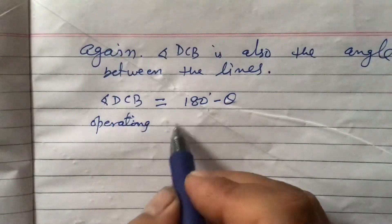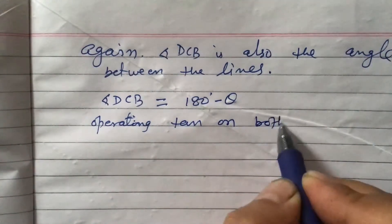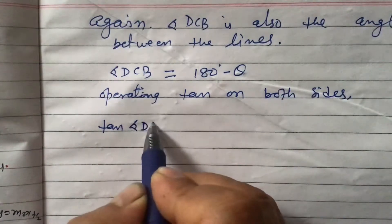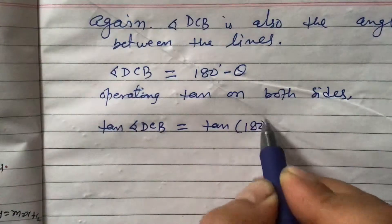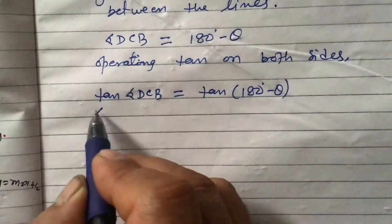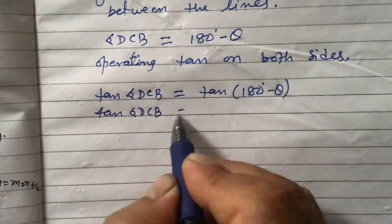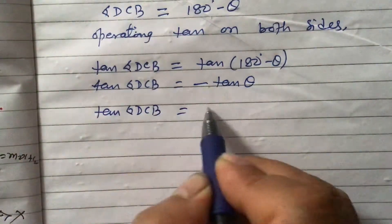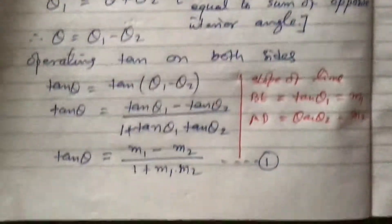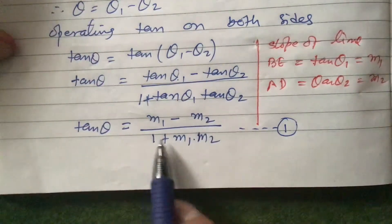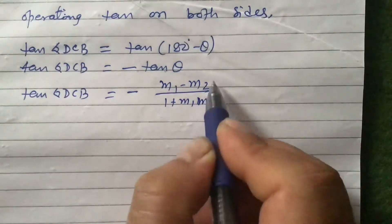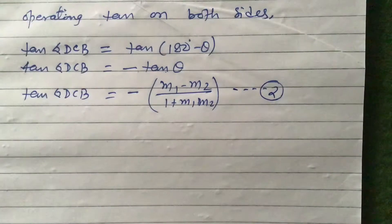Operating tan on both sides: tan(angle DCB) = tan(180° − theta) = −tan(theta). So tan(angle DCB) = −(m1 − m2) / (1 + m1·m2), replacing the value of tan(theta) from Equation 1. Let us call this Equation 2.